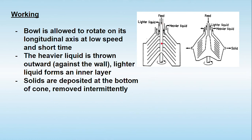The feed is introduced from the top and the bowl is allowed to rotate on its longitudinal axis — that is, vertically. At lower speed and for a period of time, the heavier liquids move outward toward the wall while the lighter liquids are taken out from the center. Solids are either separated at the outer wall or deposited at the bottom of the cone and removed intermittently.